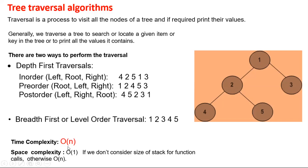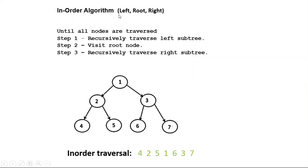On pre-order, time complexity is O(N) and space complexity is O(1) if we do not consider the stack recursion calls. If we consider the stack space required, then O(N) space is required. The in-order algorithm (left, root, right) until all nodes are traversed: recursively traverse left subtree, visit root node, and recursively traverse right subtree. Here is another example showing the sequence according to in-order traversal.